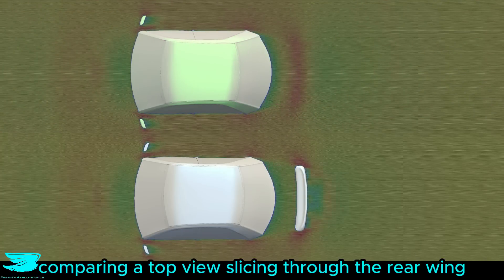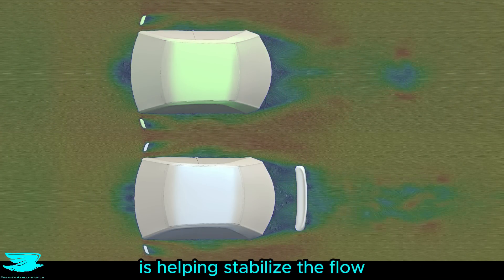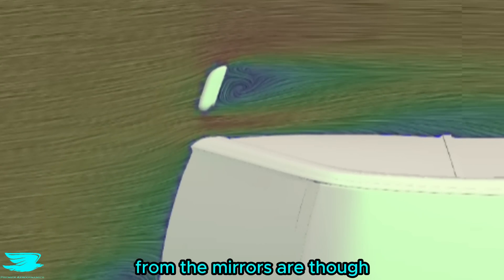Comparing a top view slicing through the rear wing, the wake is very different here, and I might even say that the rear wing is helping stabilize the flow and reducing the wake in the plane. I still can't get over how big the wakes from the mirrors are though.